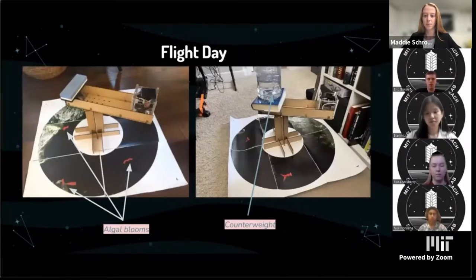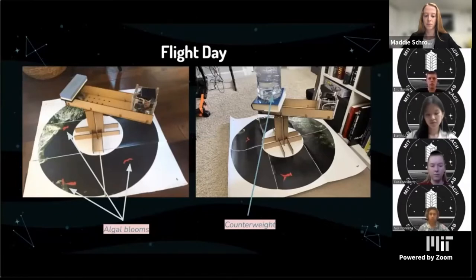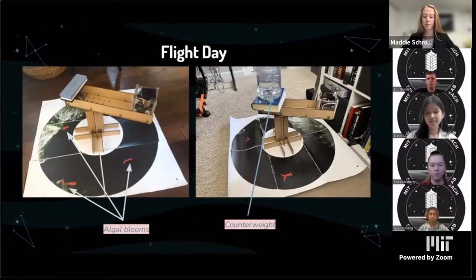Here are some images from flight day. On the left, the red tabs are the algal blooms, which are what we want our CubeSat to detect, take photos of, and send. On the right I'd like to emphasize the setup of the orbiter. Because of the distance the CubeSat is from the orbiter base, we had to put a lot of counterweight on it to prevent the orbiter from sagging, because if it did, we wouldn't be able to get a photo of the entire map and could potentially miss some algal blooms.